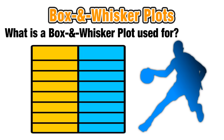First we need some data, so let's look at Jordan, a JV basketball player who has just been called up to varsity for the last seven games of the season. Jordan is using this chart to keep track of the number of points he scores for each of those seven games.